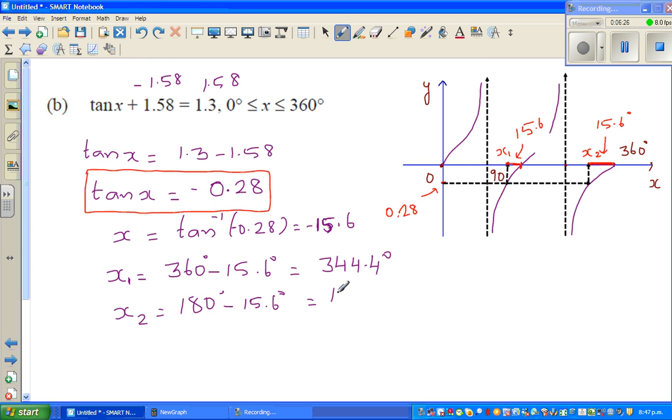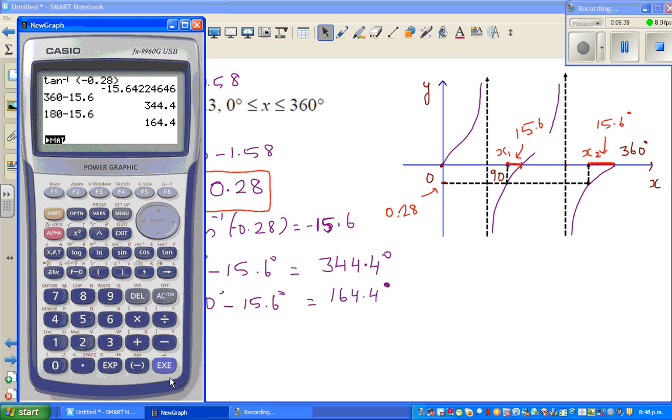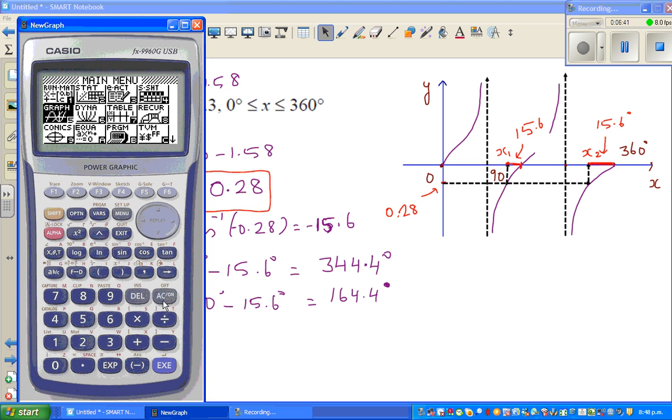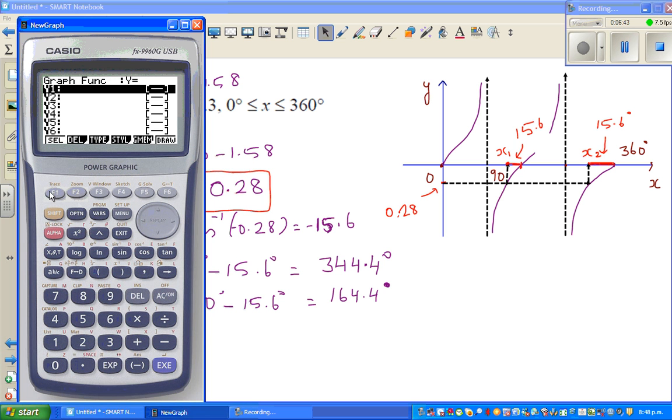Now we'll check this on the calculator. 164.4. We have rounded it, so this will not be an exact answer, but the calculator will give you an answer which is rounded to this. Now go to your graph, let me delete this so I can show you. This is tan x and this is your graph.